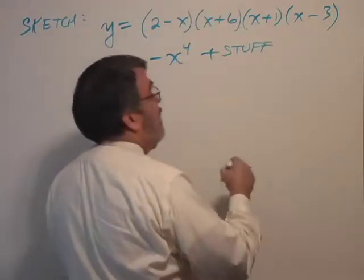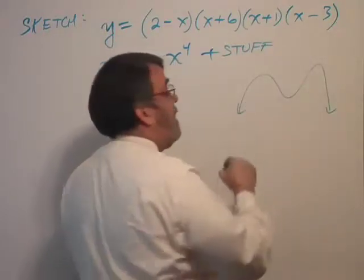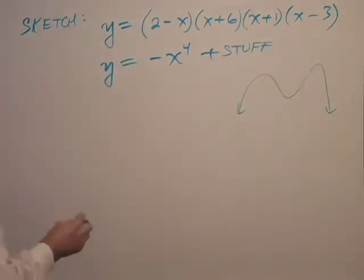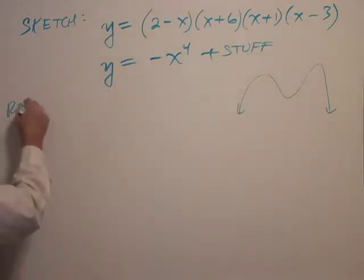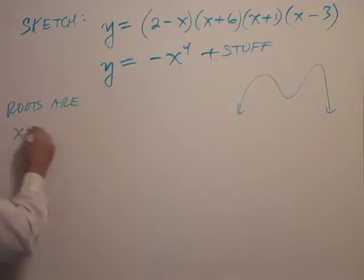Well, this shape, being quartic, it's going to be sort of an M shape, like so. And it has four roots. The roots are x equals 2.